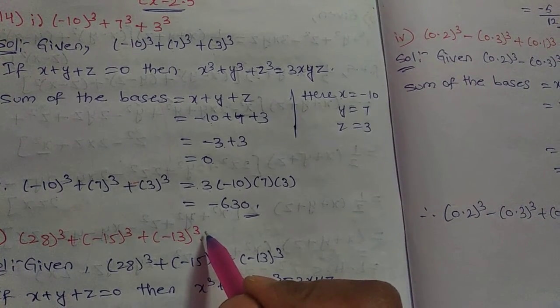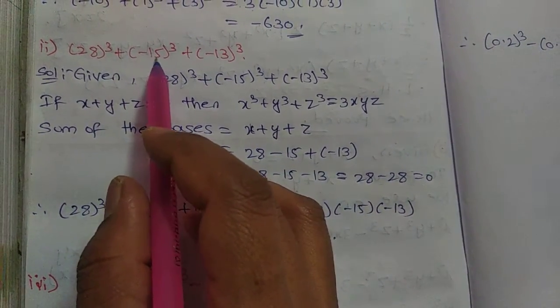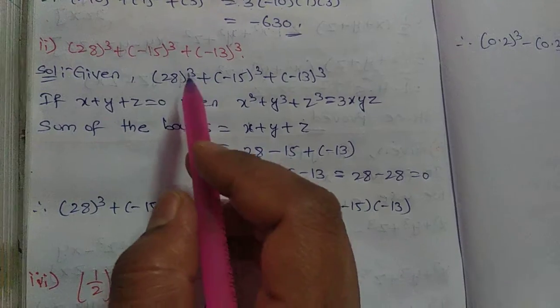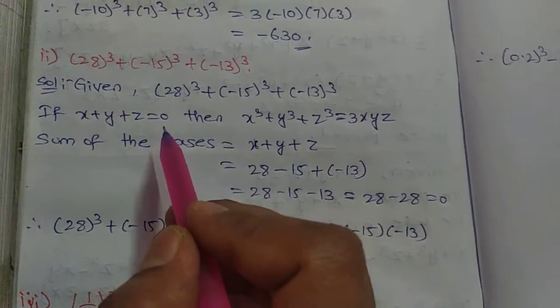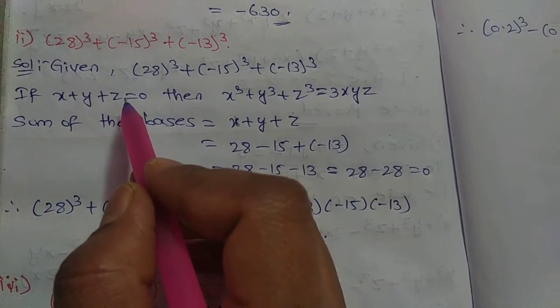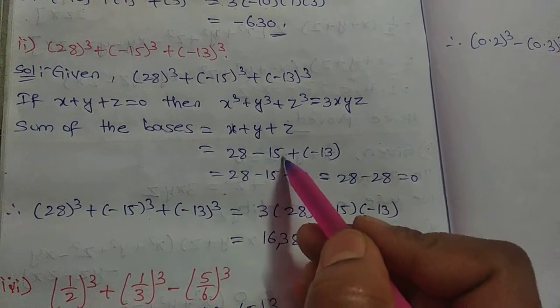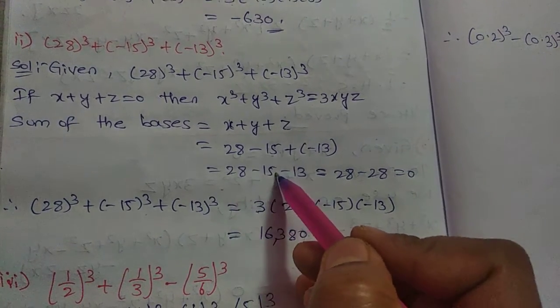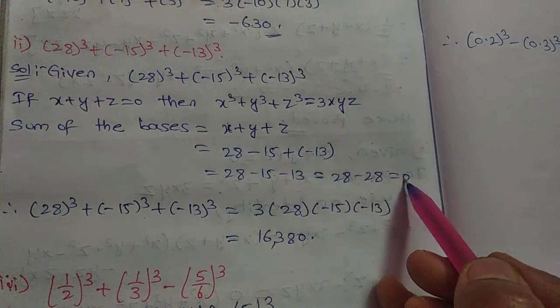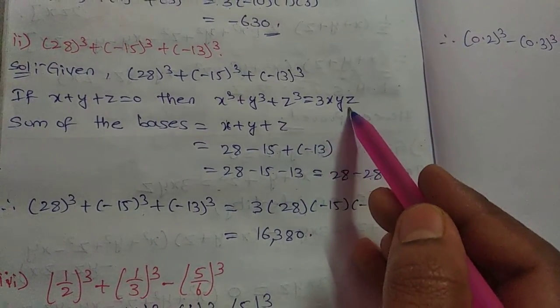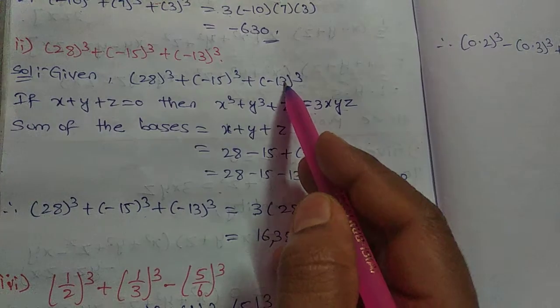Second one: 28³ + (-15)³ + (-13)³. This is also in the x³ + y³ + z³ form. First, check if x + y + z = 0. Here, x + y + z equals 28 + (-15) + (-13), which equals 0. So we can use the identity x³ + y³ + z³ = 3xyz.